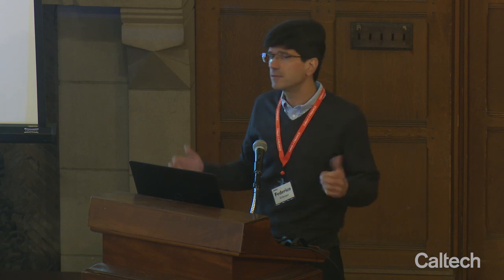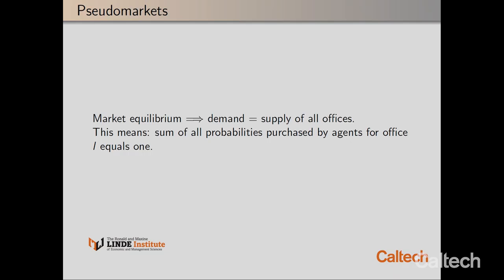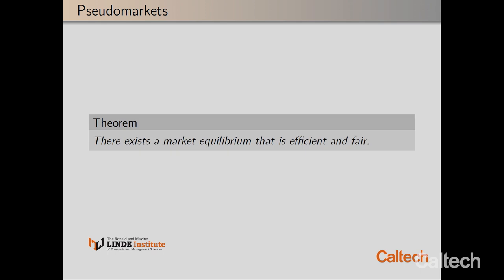This wouldn't be a market if there weren't equilibria, and sure enough, we look for market equilibrium — when demand equals supply. The demand is the sum of the probabilities each person holds. For office L, I sum: my one-third, Mike's one-third, Lawrence's one-third, adding up to one — which equals the supply of one office. We look for a market equilibrium where the sum of probabilities equals the supply of one for each office. There's a theorem ensuring that there exists an equilibrium that's both efficient and fair.